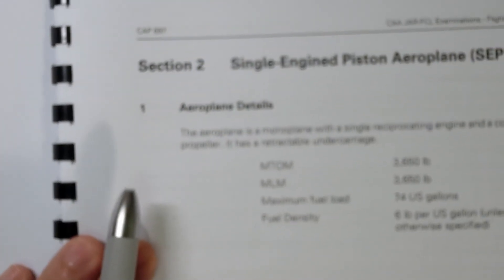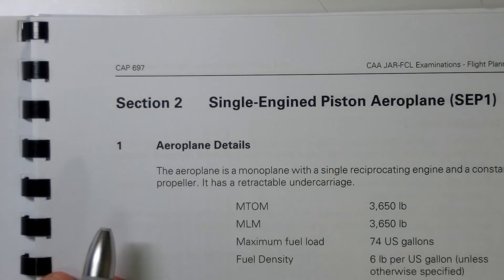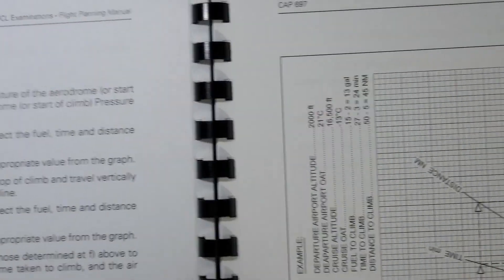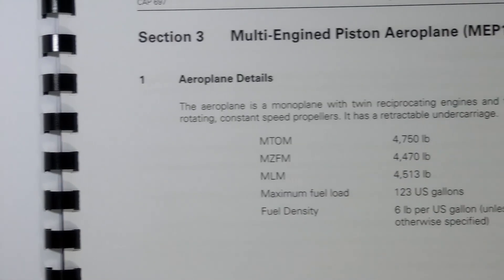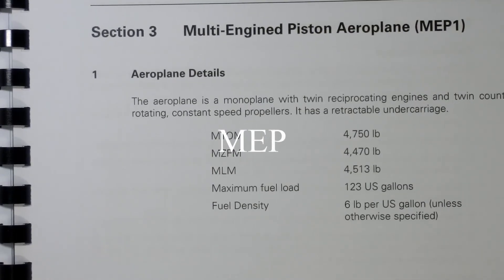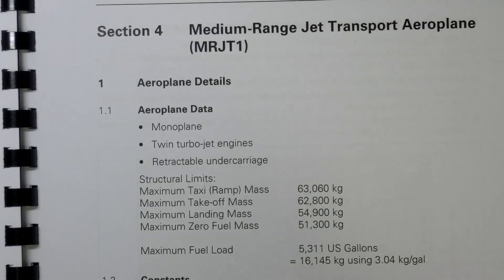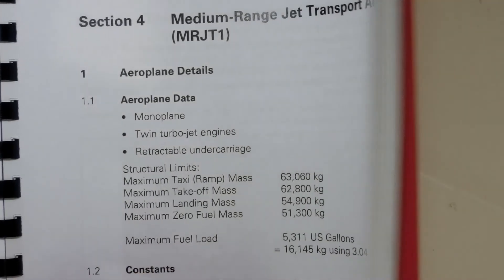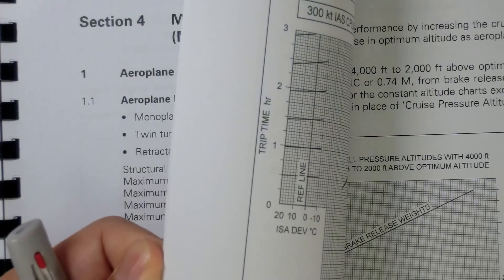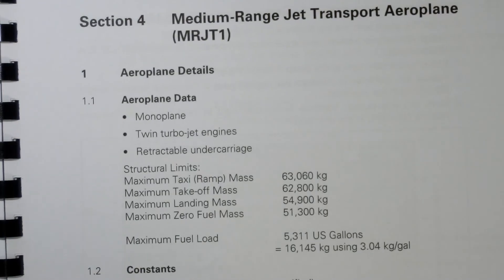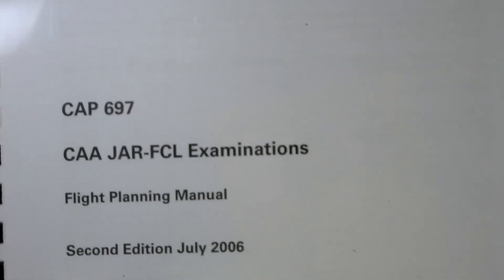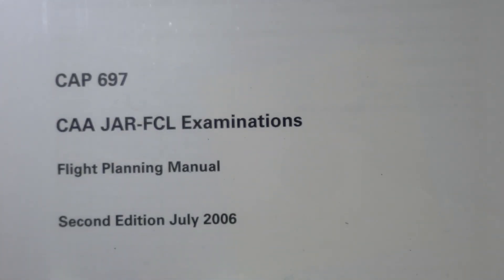Section 2 is the layout for the single-engine piston aeroplane. We then go into Section 3 for the multi-engine piston aeroplane, and very quickly onto Section 4, the medium-range jet transport aeroplane. This section is the largest in the publication — it accounts for slightly more than half, simply because there's a lot of data. And that's what we're going to find in our CAP 697 flight planning manual.